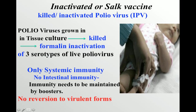The inactivated Salk vaccine (IPV) uses polioviruses grown in tissue cultures, then killed or formalin-inactivated. All three serotypes are used. Because it is injected, it only produces IgG — systemic immunity — and no intestinal immunity, since it does not enter the intestines. Immunity must therefore be maintained by repeated boosters, but the advantage is it cannot revert back to its virulent form.